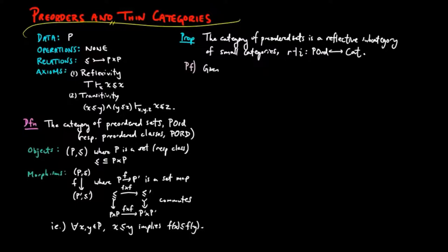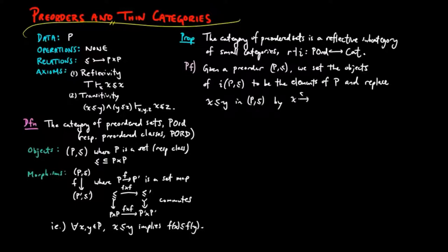For the proof, given a pre-order P, we set the objects of IP to be the elements of P and replace the relation x less than or equal to y by a morphism in IP. Then the reflexive and transitive axioms correspond to the identity and composition for IP.